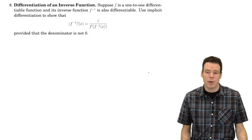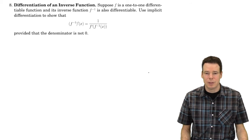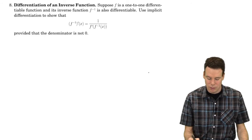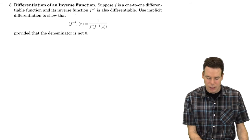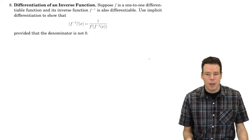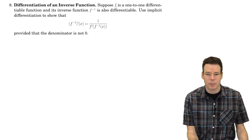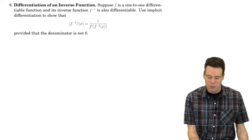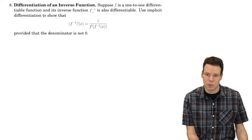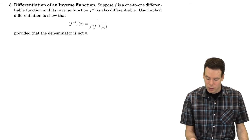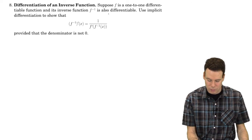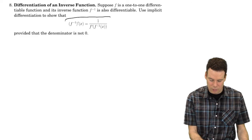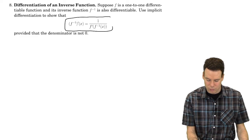We're going to look at the problem of finding the derivative of an inverse function, and we'll see how implicit differentiation can help us do this. The setup is: suppose f is a one-to-one differentiable function and its inverse is also differentiable. We're going to use implicit differentiation to show the relationship between the derivative of the inverse and the derivative of the function itself.